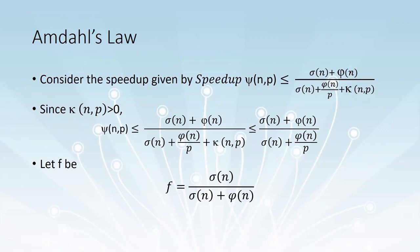Now we will see what is Amdahl's law. For that we rewind to speedup. Speedup psi of n, p is less than or equal to sigma of n plus phi of n, divided by sigma of n plus phi of n over p plus kappa of n, p. Specifically look at the term kappa of n, p.